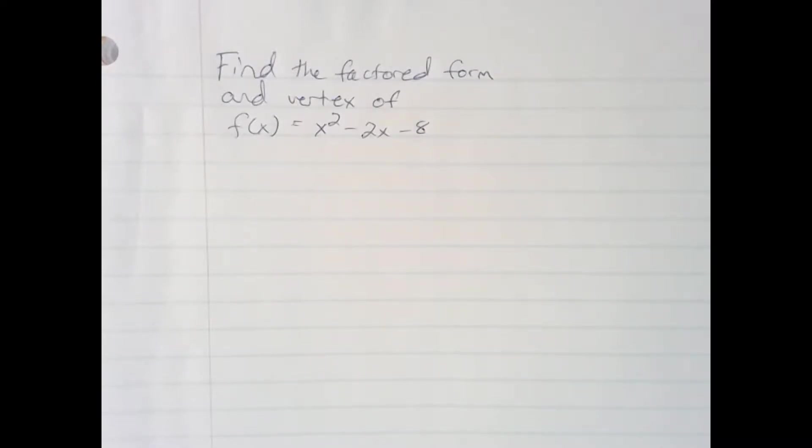Okay, here we need to find the factored form of the quadratic x squared minus 2x minus 8, and find the vertex.